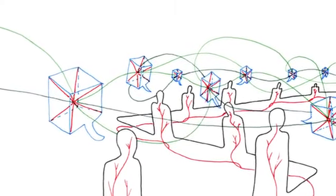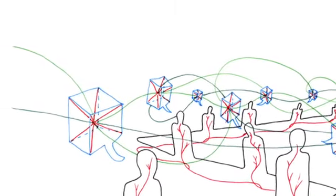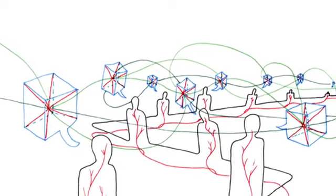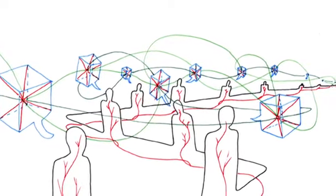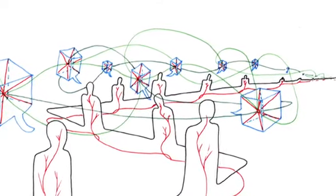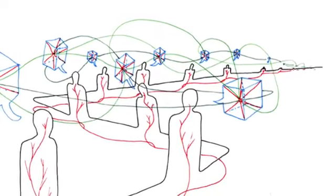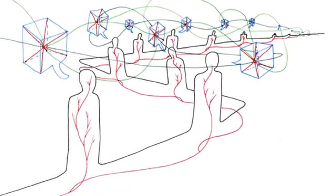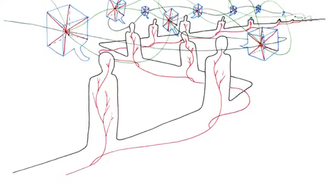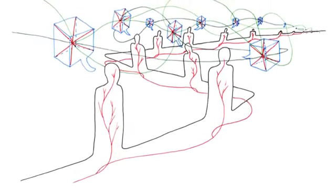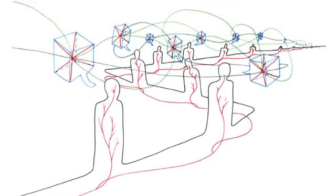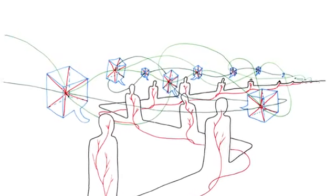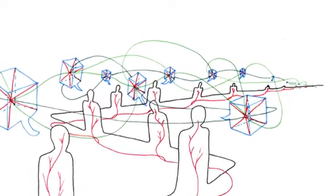A rhizome ceaselessly establishes connections between semiotic chains, organizations of power, and circumstances relative to the arts, sciences, and social struggles. A semiotic chain is like a tuber, agglomerating very diverse acts, not only linguistic, but also perceptive, mimetic, gestural, and cognitive. There is no language in itself, nor are there any linguistic universals, only a throng of dialects, patois, slangs, and specialized languages. Language stabilizes around a parish, a bishopric, a capital. It forms a bulb. It spreads like a patch of oil.